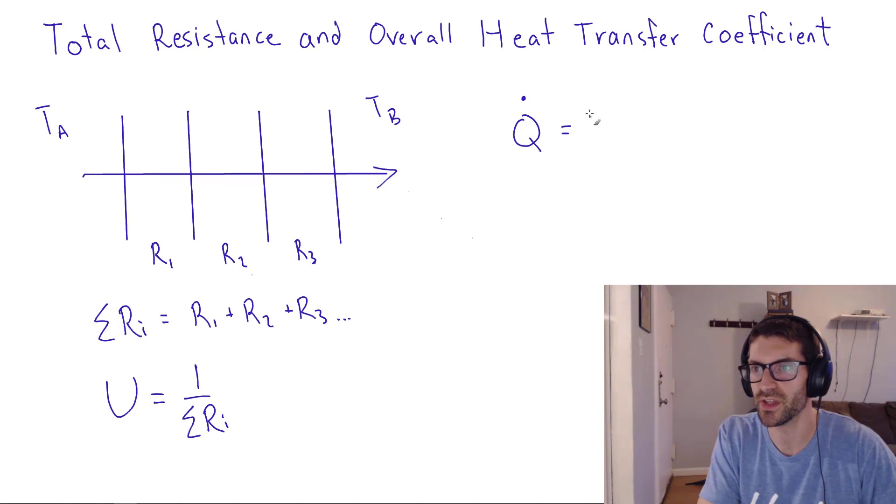is equal to that overall heat transfer coefficient, which takes into consideration all those individual resistances times the area times the delta T.